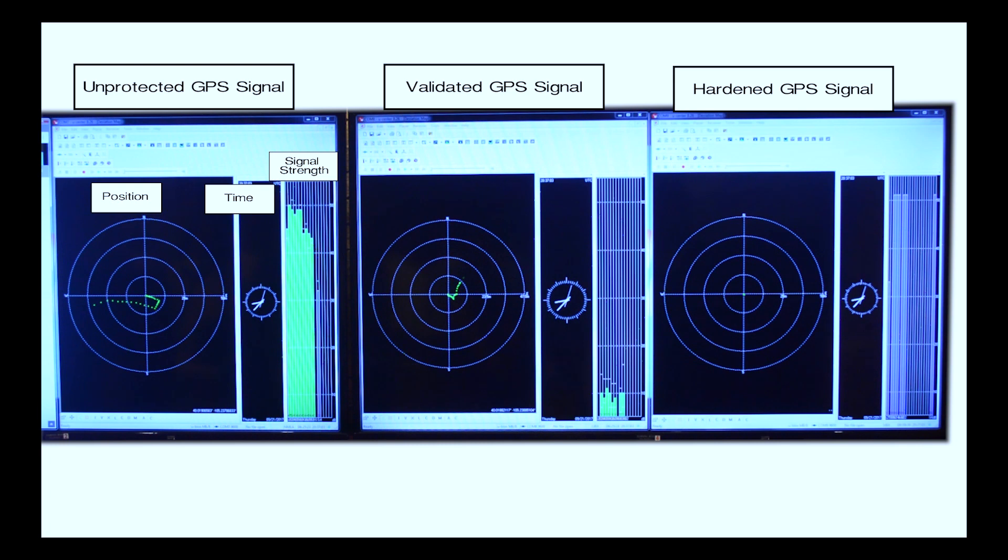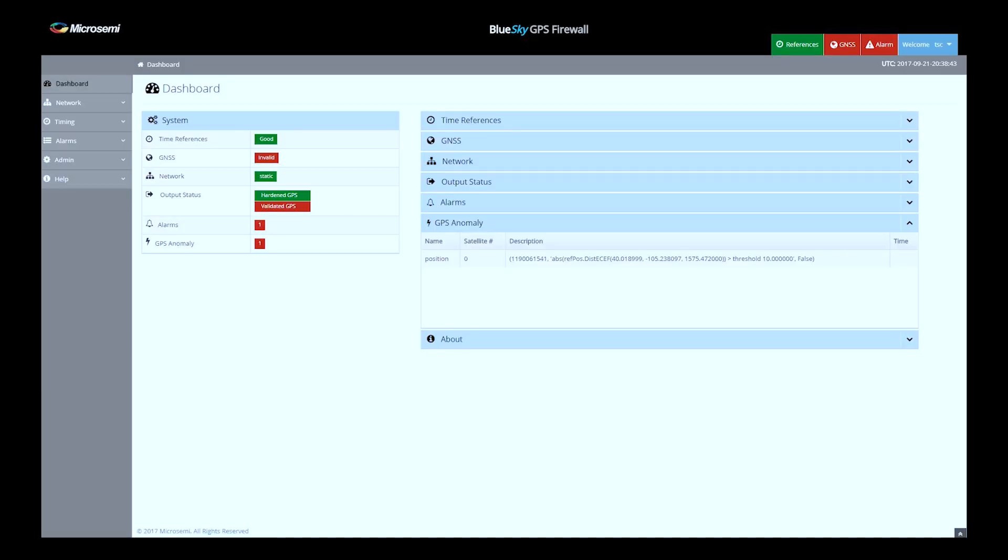Finally, let's move over to the blue sky GPS console. And we see that the validated output went into an alarm state, as expected. And we've got the drop down menu showing us the actual GPS signal alarm, showing it as an invalid GPS signal, showing it as a position offset, and the time that it occurred. So this completes our demonstration.